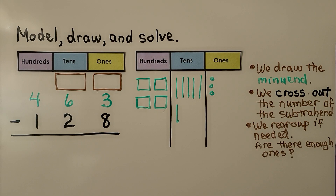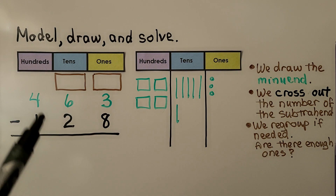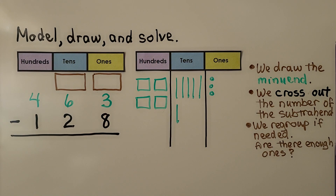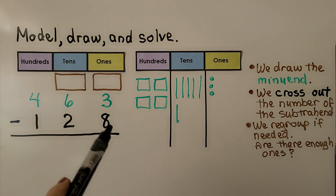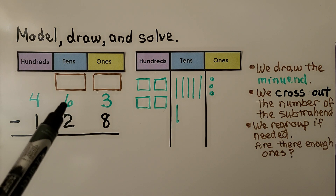It's telling us to model, draw, and solve. We have 463 minus 128. The first thing we do is draw the minuend: four hundreds, six tens, three ones. Then we cross out the number of the subtrahend, starting with the ones place. We have three ones and we need to take eight ones away — we can't, we don't have enough. So we need to regroup from the tens place.